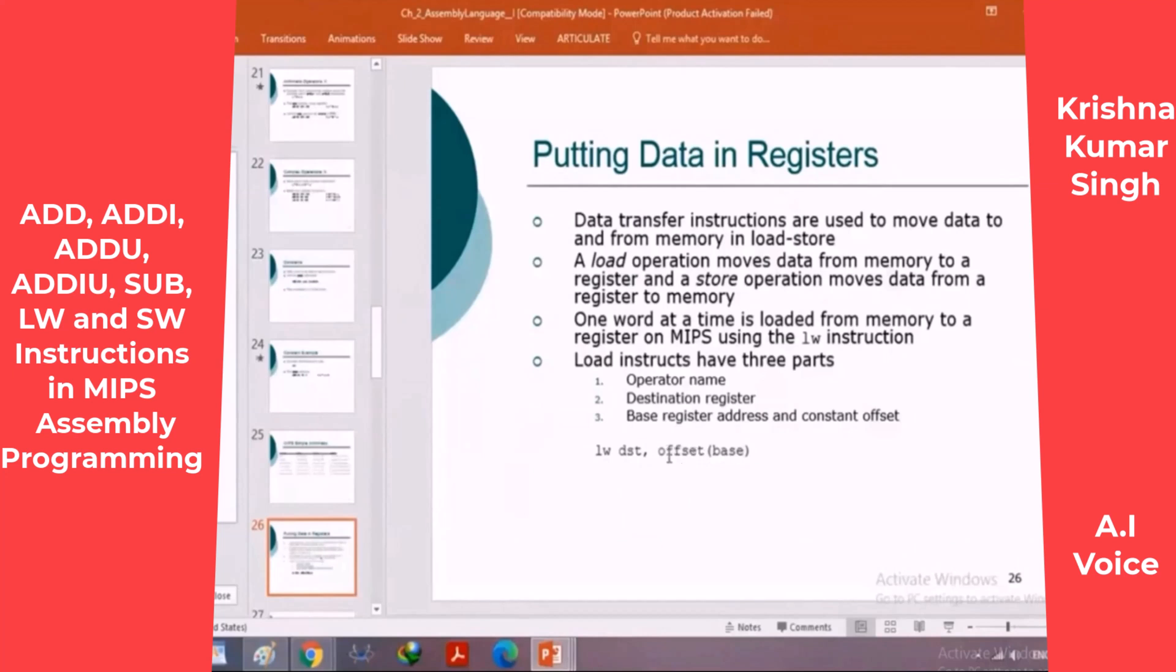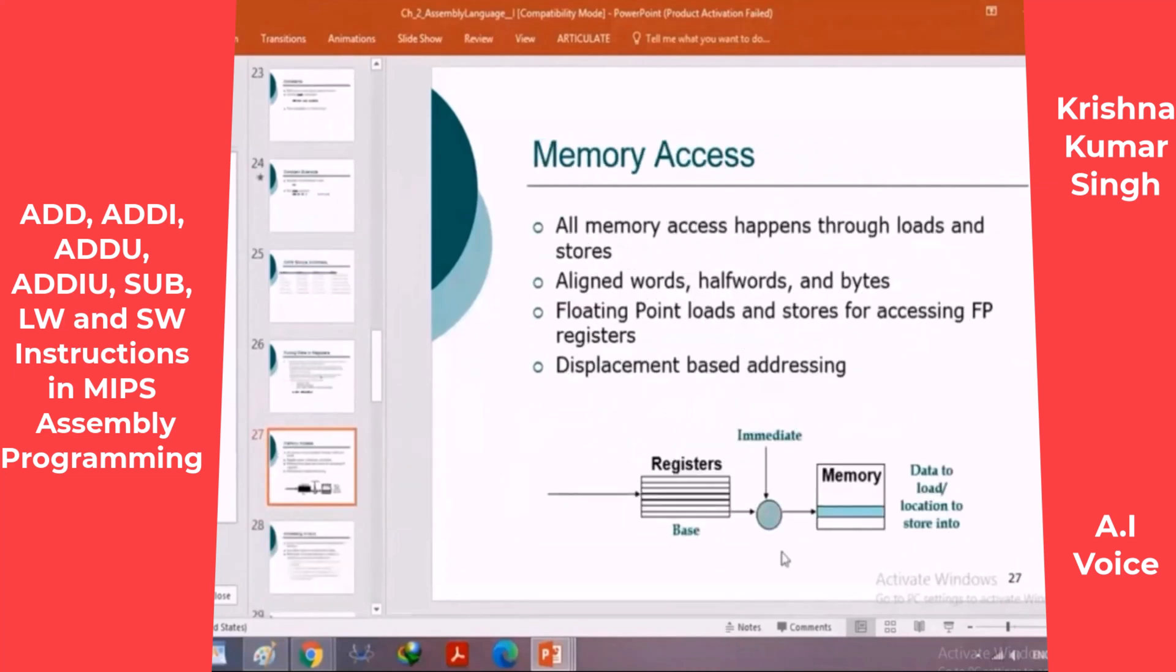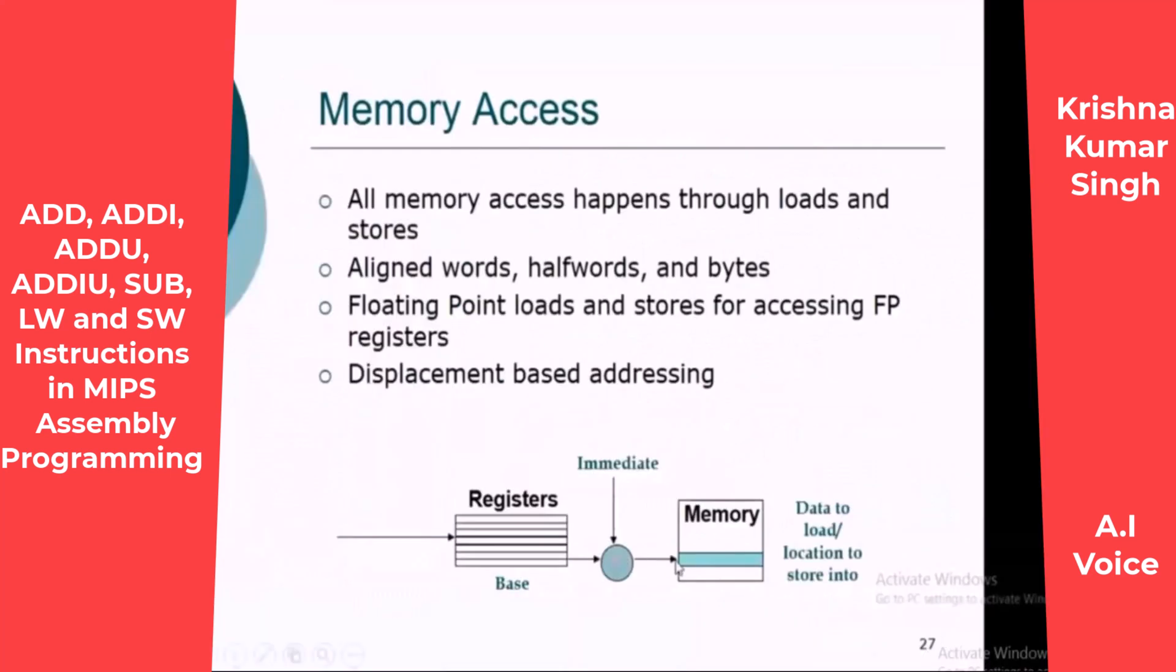Last week I explained the load word and store word instructions. As you can see, for the load word, the second parameter has two parts: the base register and the offset. The constant offset will be added with the content of the base register and that value will be used.